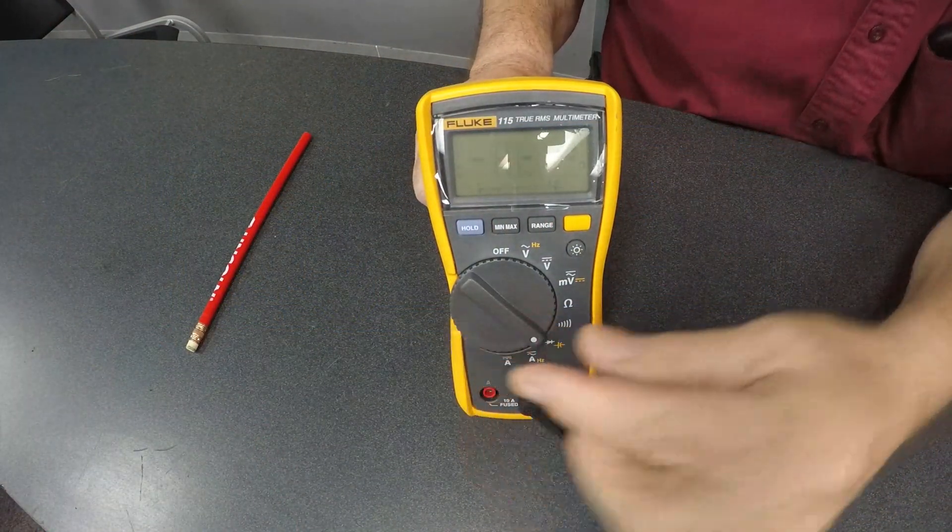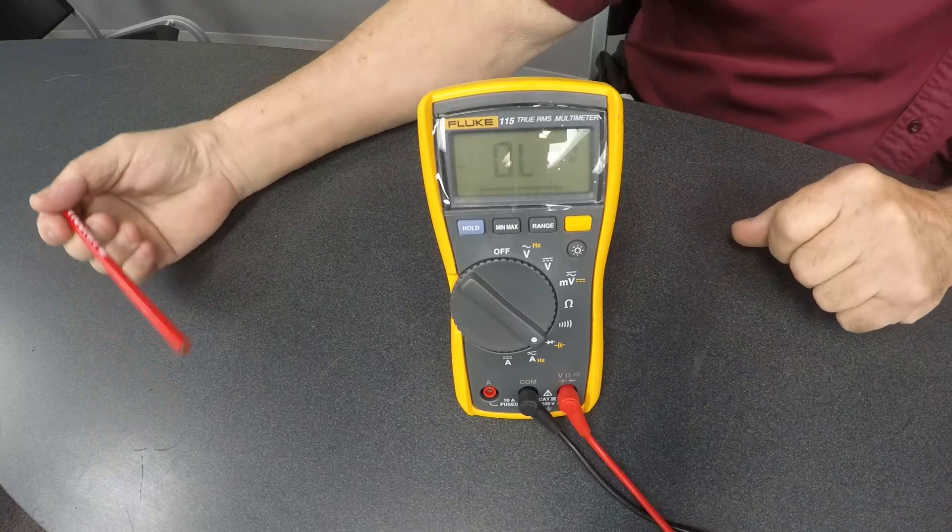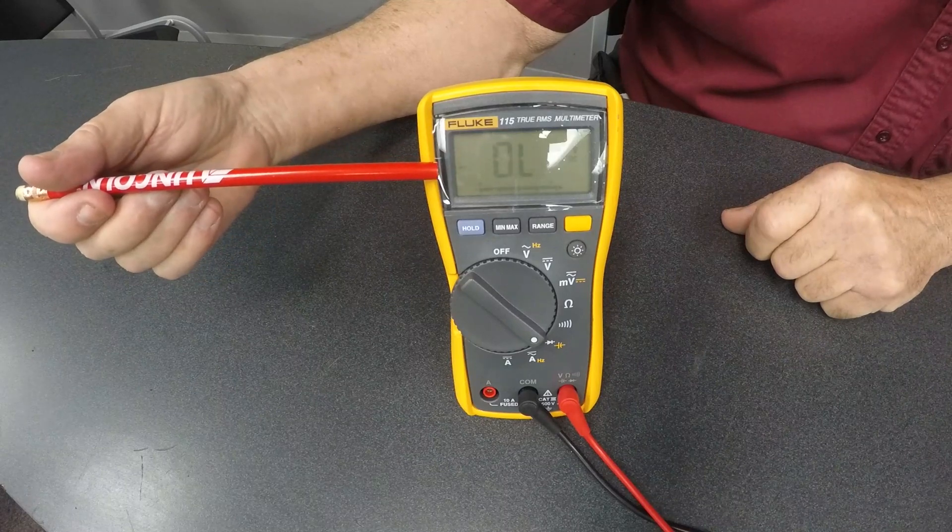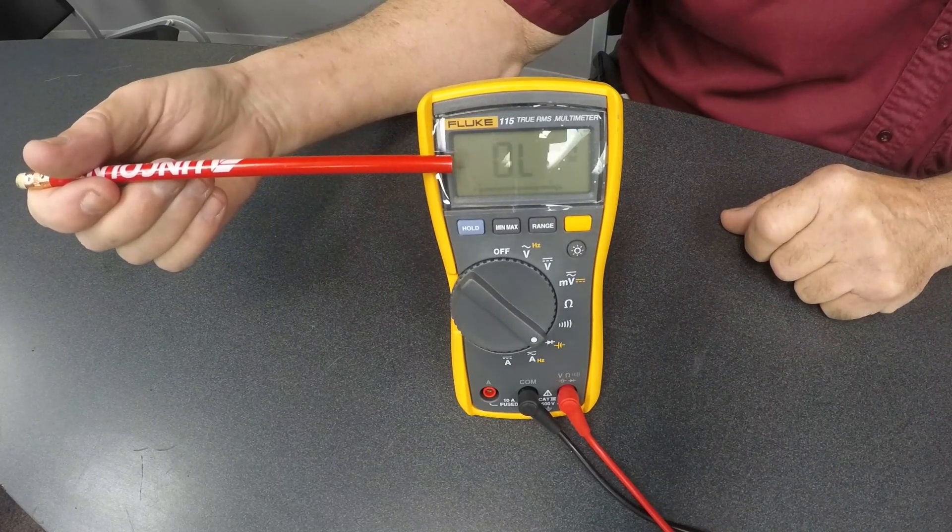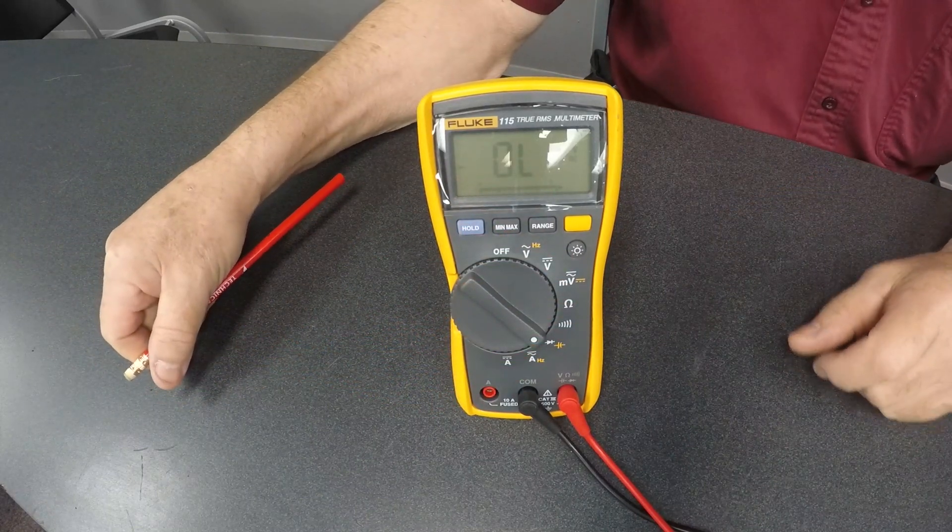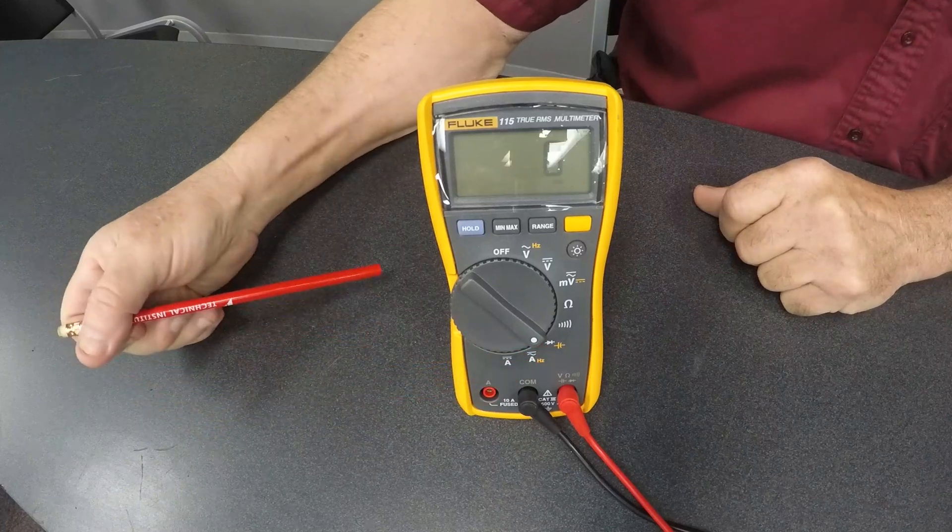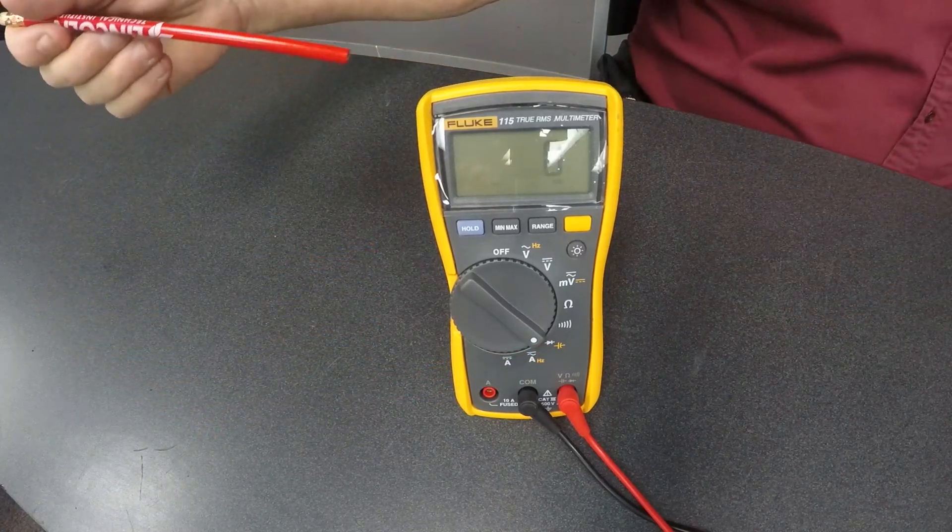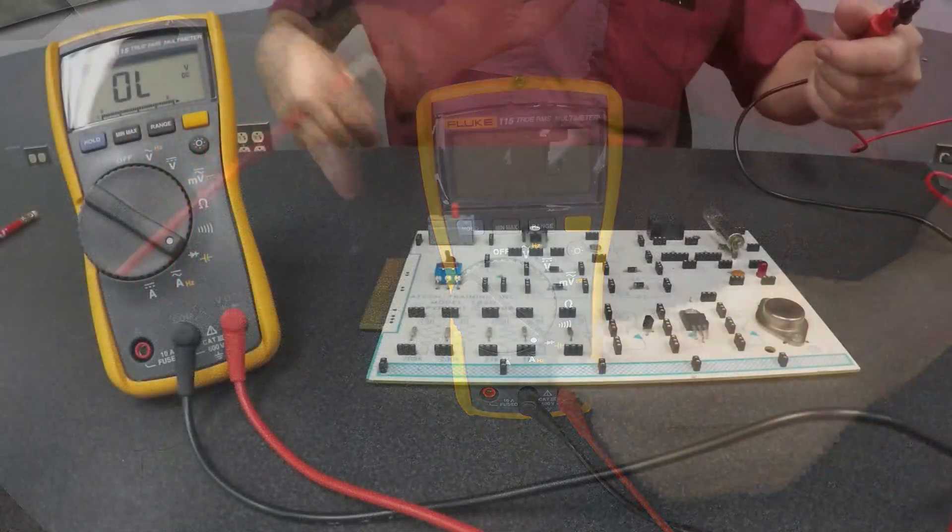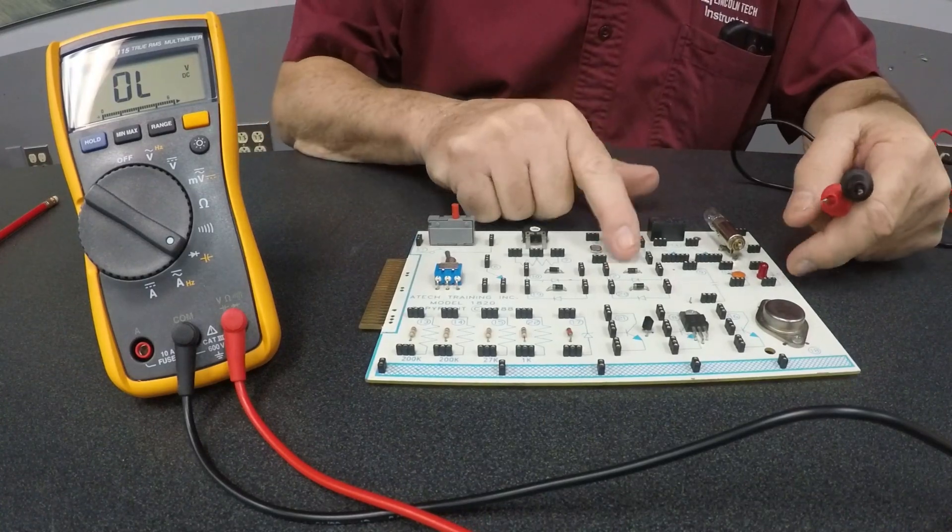The next setting down here is for testing solid-state circuitry. As you can see when you first set it on here, it says DC volts on the one side, and over here you can see where it has a diode. The diode is the white image down here, and that's for checking diodes.